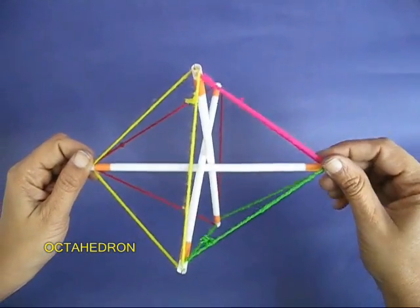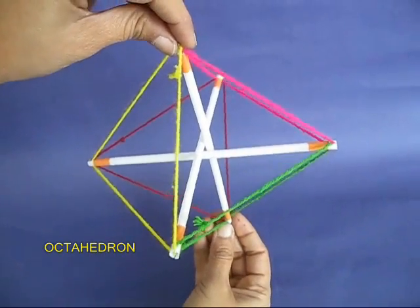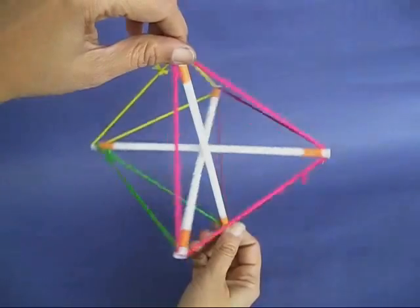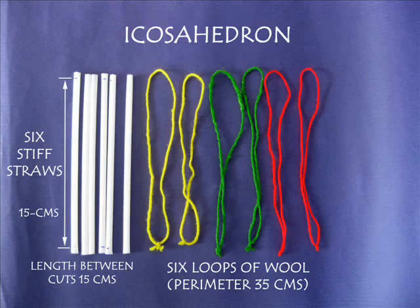The wool is in tension and the struts or straws are under compression. It is a very elegant model to behold. You can also make this with rubber bands and stiff straws.